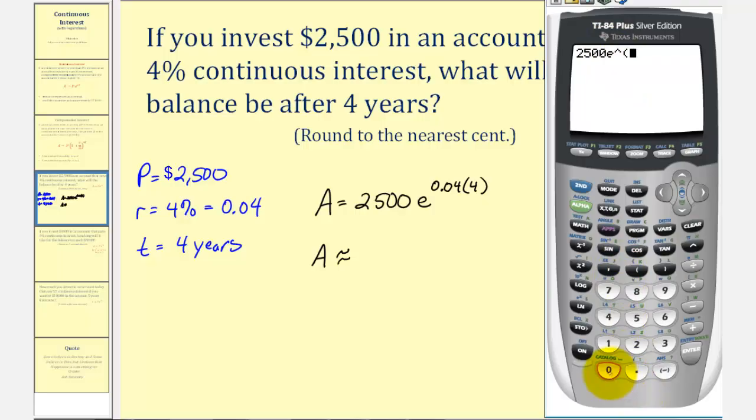And then we have 0.04 times four as the exponent, close parenthesis, and enter. So the balance will be approximately $2,933.78.